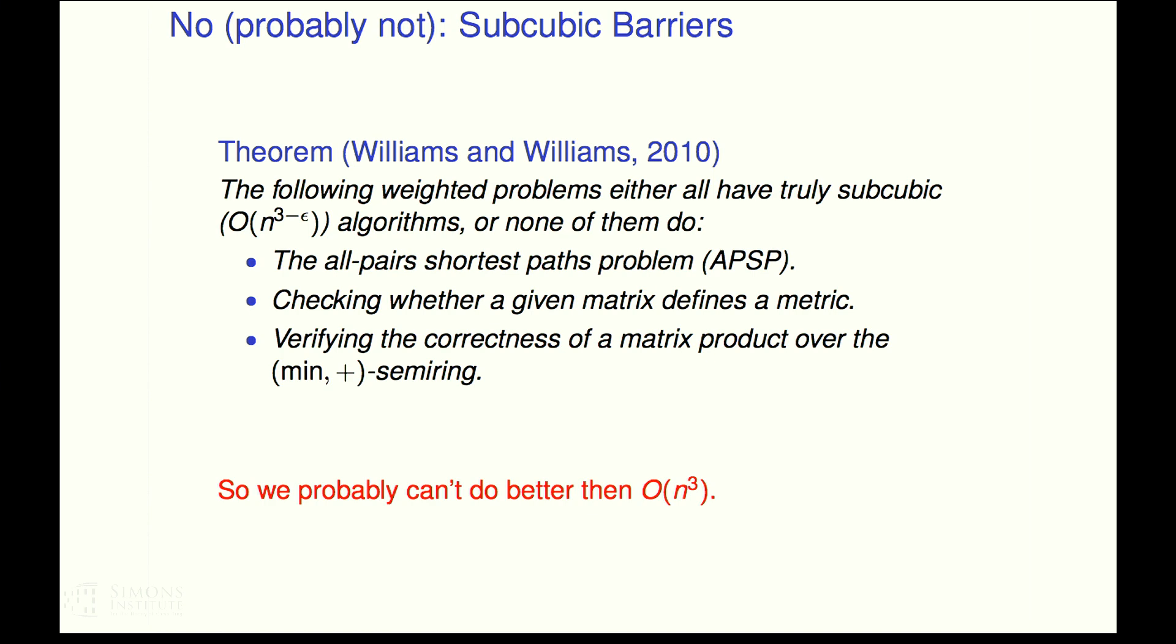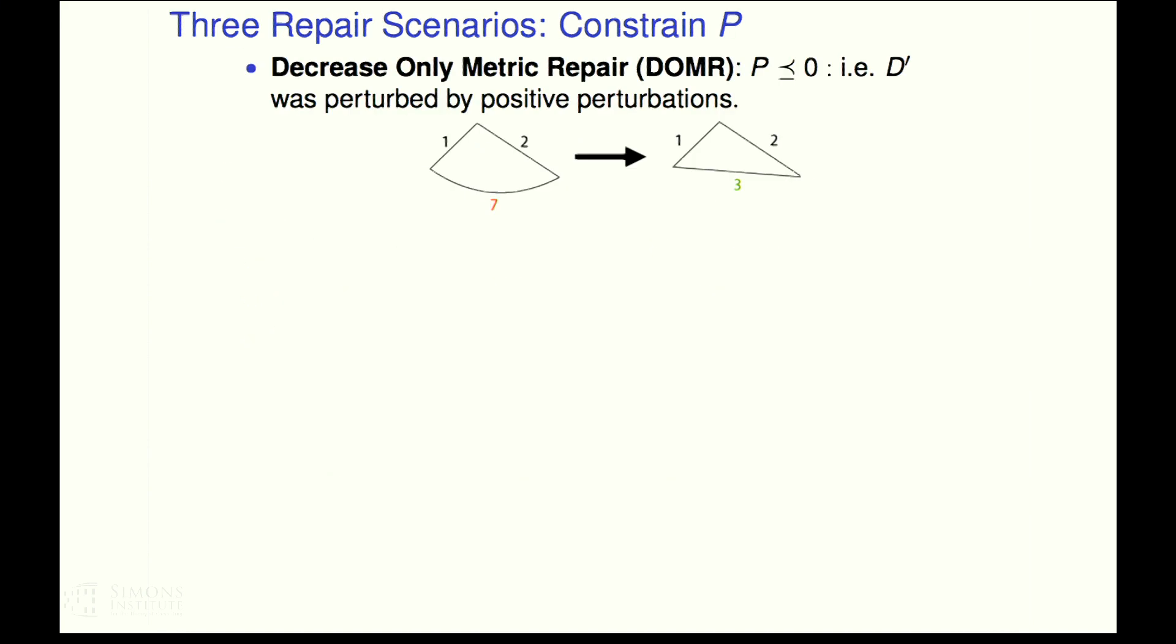So I'm going to give up on faster than n cubed time. But I'm not going to give up on exploring the combinatorial nature of these problems. Because M is so structured. It's so nice. This is not a general polytope. There's something really beautiful in here. And so in order to exploit the combinatorial structure, I want you to think for a bit about all of the different scenarios we could have for our repairs. Let's break this problem down into pieces and see if we can tackle each piece.